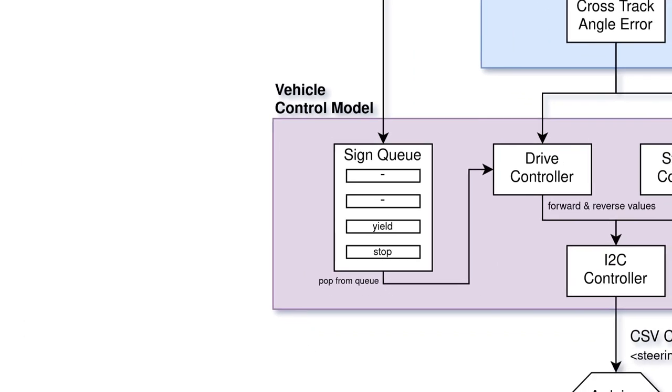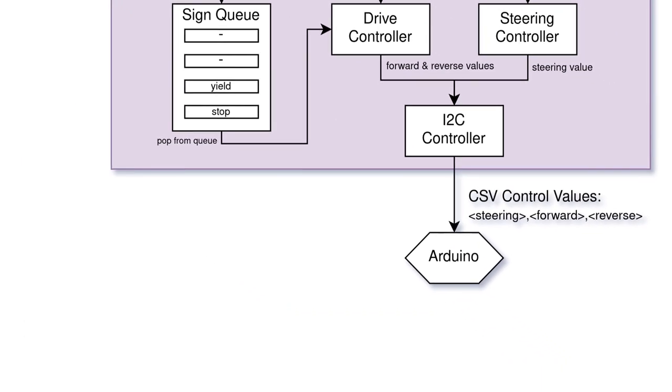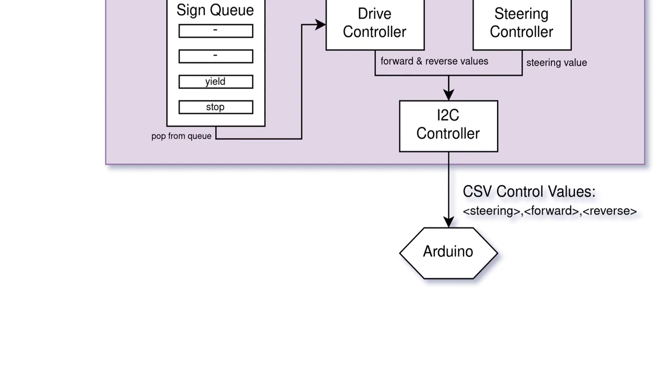The final drive and steering values, determined by the drive and steering controllers, are sent over I2C to the Arduino, which maps the values to a pulse width to control the steering servo and the electronic speed controller for the drive motor.